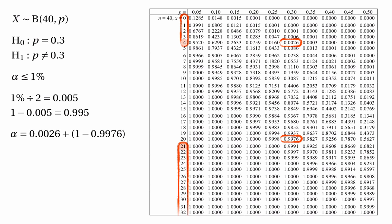To calculate the exact level of significance: the probability of getting 0, 1, 2, 3, or 4 is 0.0026, and the probability of getting from 21 up to 40 is 1 minus 0.9976. Adding those together gives 0.005, and that's the exact level of significance in this case.